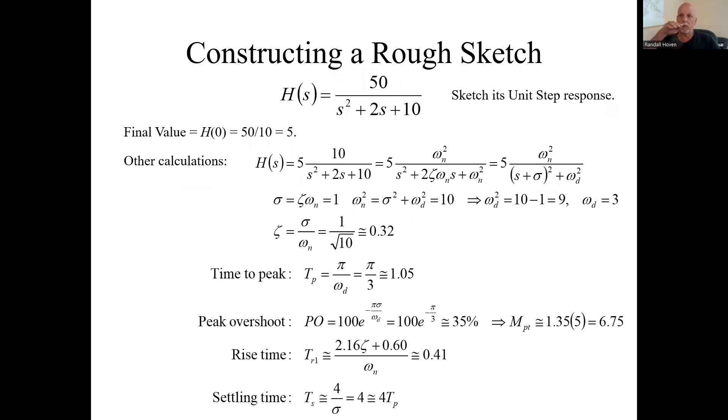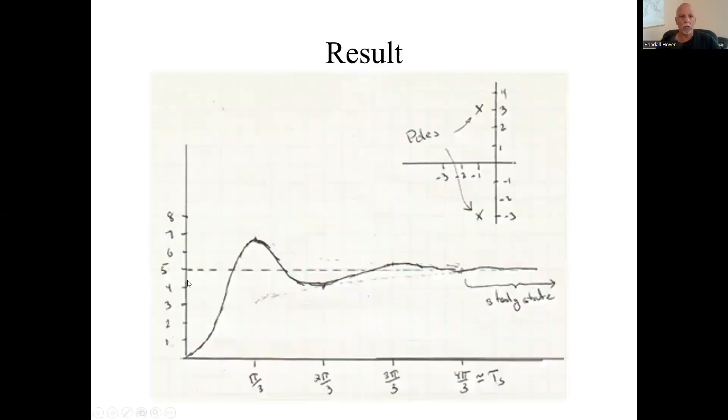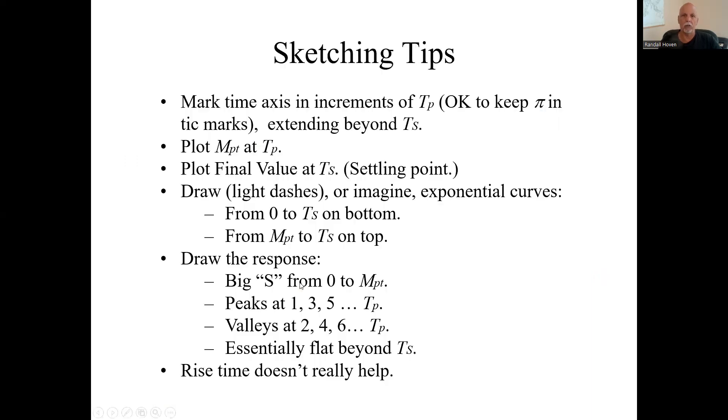Well, first, what is that final value? What level is it going to asymptotically approach? We use the final value theorem by setting S to zero, which is going to be 50 over 10 or 5 in this case. If you were only given the pole locations, we would just use 1 because the pole location doesn't tell you what the numerator is. So once we have that, we can draw this dashed line. It's 5, right? That's all we did so far.